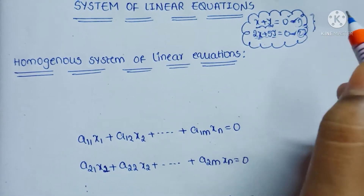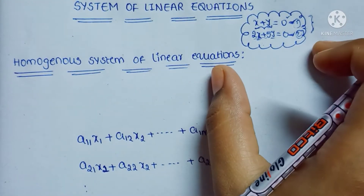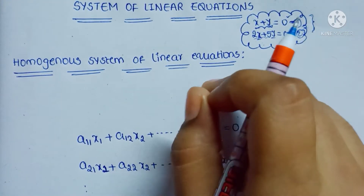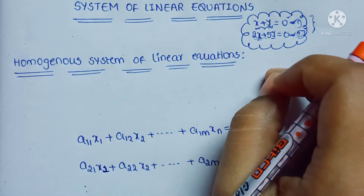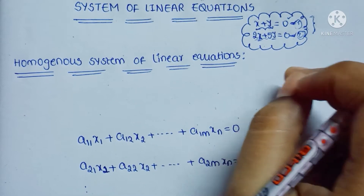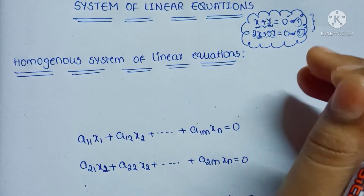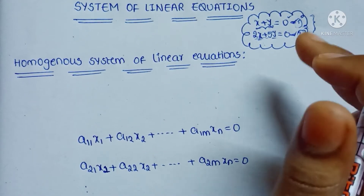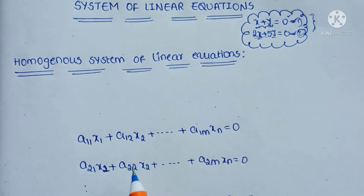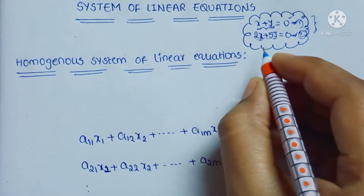Here with two equations and two unknowns, we can find the solution easily. But if we have 10 equations with 10 unknowns, then the solution is a very time-consuming process. In order to avoid this, we use the matrix method.